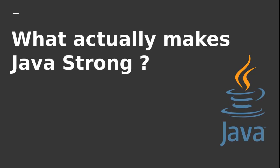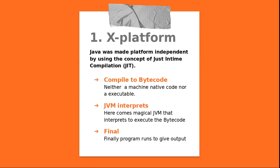What actually makes Java strong? There are a lot of things that make Java strong. Let's check one by one. First thing is its cross-platform nature. It is cross-platform, which means if you compile it on one machine, you can run it on another machine as well. It doesn't matter what OS you are using — if you compile it on Windows, you can run it on Ubuntu or Mac OS.